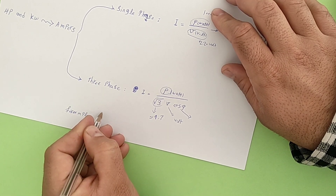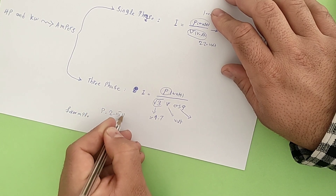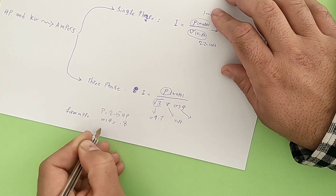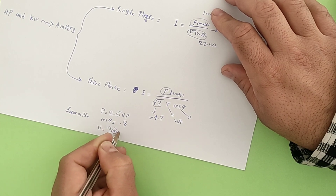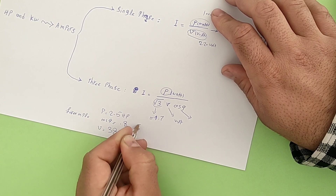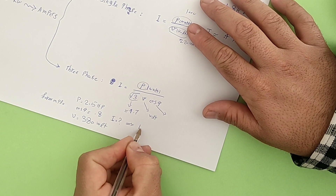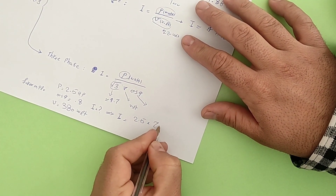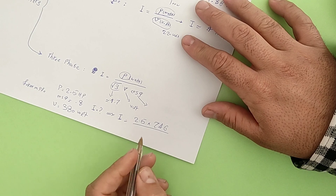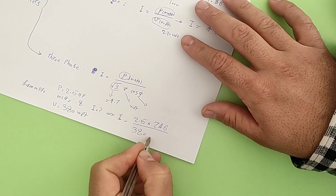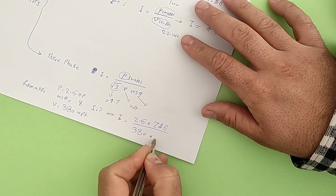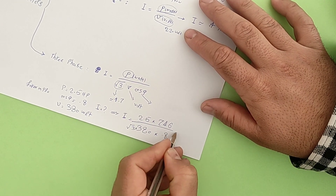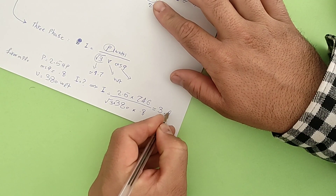For example, for a three-phase consumer whose power equals 2.5 horsepower, working with 380 volts, and with a cosine phi of 0.8, it is calculated as follows. Note that the power must be converted to watts first. The current equals 3.6 amperes.